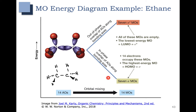For each sigma bonding molecular orbital, there must be a sigma star antibonding molecular orbital, so seven of the molecular orbitals are bonding and seven of the molecular orbitals are antibonding. The bonding molecular orbitals are lower in energy than the antibonding molecular orbitals. In ethane, we have 14 electrons, one for each bond, and so those 14 electrons will fill these seven bonding molecular orbitals.